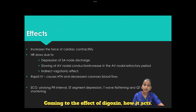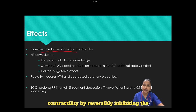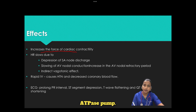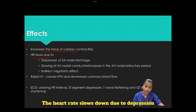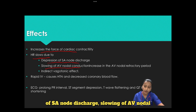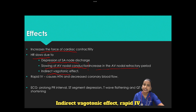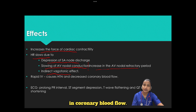Coming to the mechanism of action of digoxin: it increases the force of cardiac contractility by reversibly inhibiting the activity of the myocardial sodium-potassium ATPase pump. The heart rate slows down due to depression of SA node discharge, slowing of AV nodal conduction, increase in the AV nodal refractory period, and indirect vagotonic effect. Rapid IV injection can cause hypertension and decrease in coronary blood flow, so this must be kept in mind.